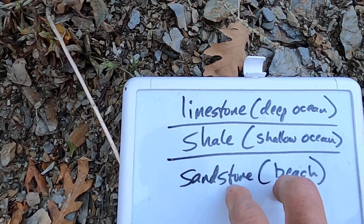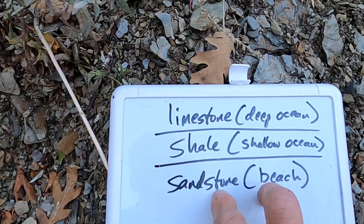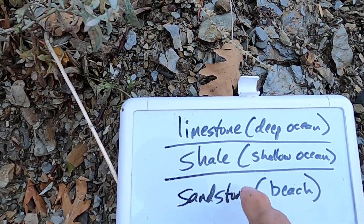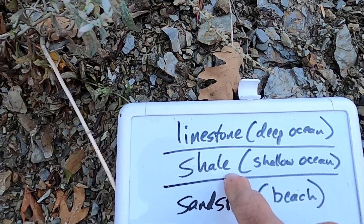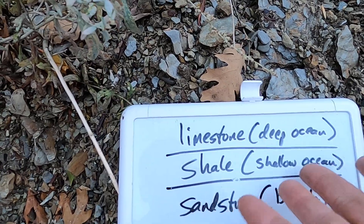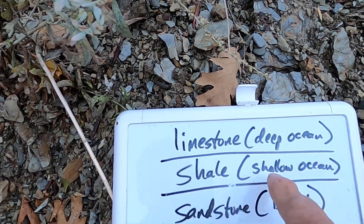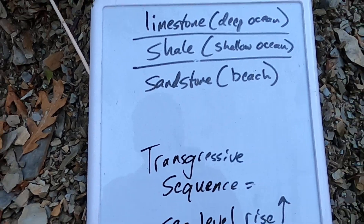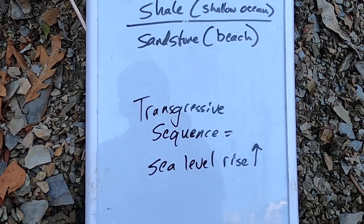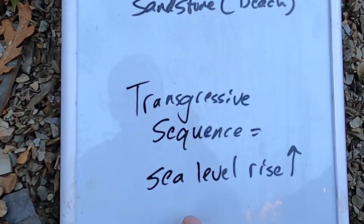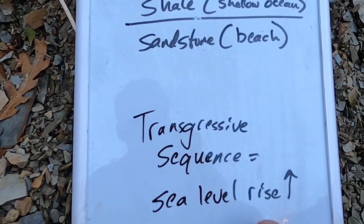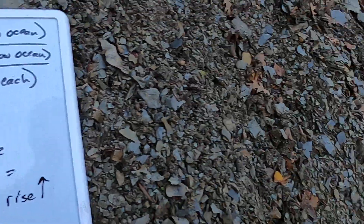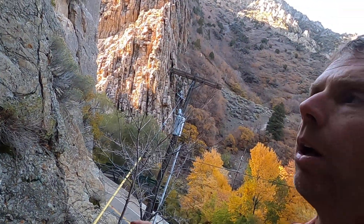It deposited sand for a while, but then sea level rose to deposit the muds for the shales. Sea level kept rising to deposit these limestones. Collectively, this sequence of rocks is what we call a transgressive sequence, and it indicates that sea level was rising during this period of the Cambrian.